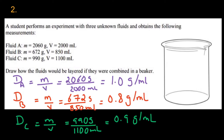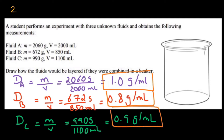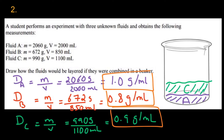Now looking at those numbers — which has the highest density? Fluid A has nearly 1 gram per milliliter, so it goes at the bottom. Then fluid C at 0.9 grams per milliliter in the middle. Then fluid B at 0.8 grams per milliliter at the top. So the fluids are layered: A at the bottom, C in the middle, and B at the top.